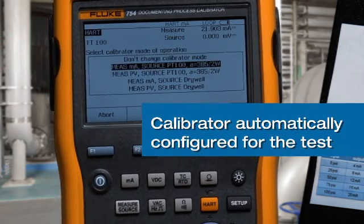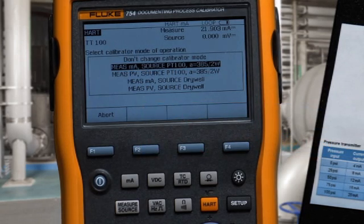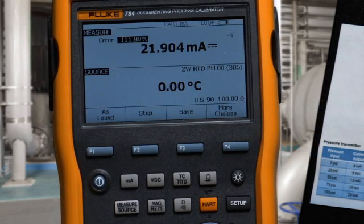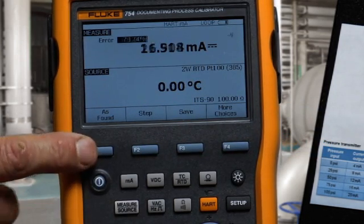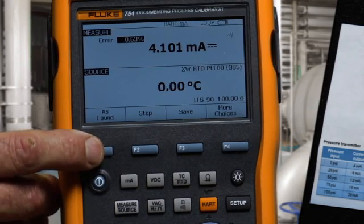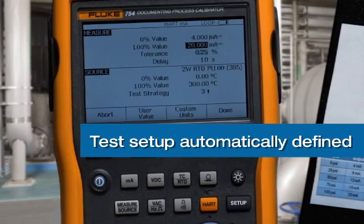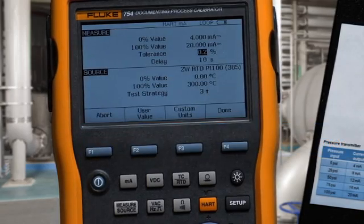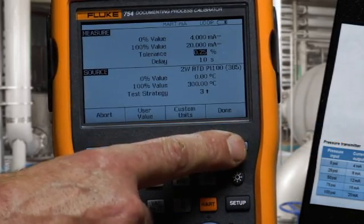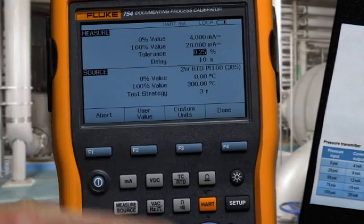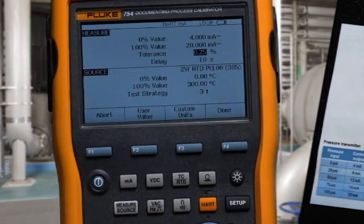We continue and configure the calibrator to measure and source the correct values. And then to initiate the test, we select as found to input the test tolerance. Test tolerance of 0.25%, sourcing 0 to 300 degrees C, PT100 385.